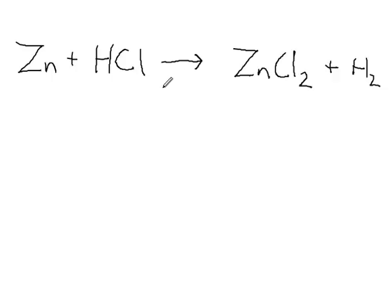So as you know, when you react a metal with an acid, you get a salt, in this case zinc chloride, and hydrogen gas.